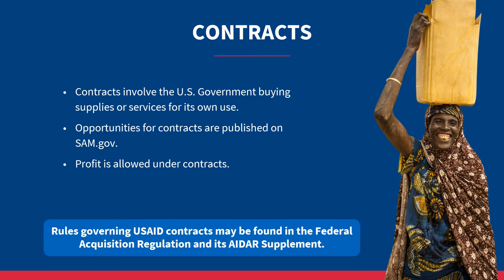Opportunities for contracts are published on beta.sam.gov. Profit is allowed under contracts; however, non-profit organizations may apply for contracts and opt not to accept profit. The rules governing USAID acquisition awards may be found in the Federal Acquisition Regulation, or FAR, and its supplement under the Agency for International Development Acquisition Regulations, or AIDAR.